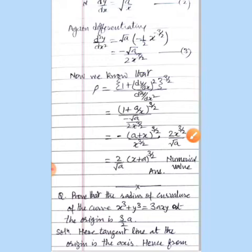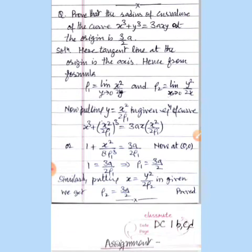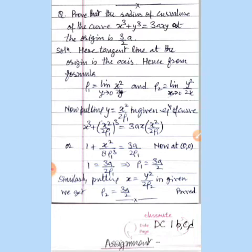We solved the Cartesian case simply. Now let us study Newton's method — when the tangent line passes through the origin along the x-axis or y-axis. In this case, how do we find the radius of curvature? Let us discuss this question: prove that the radius of curvature of the curve x³ + y³ = 3axy at the origin is 3a/2. We take the x-axis and y-axis as tangent lines separately.